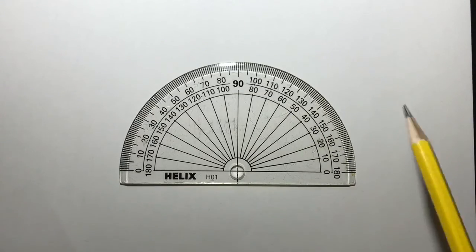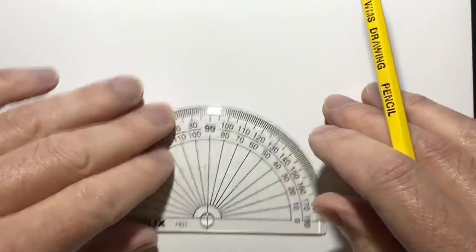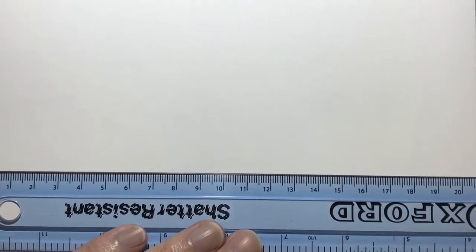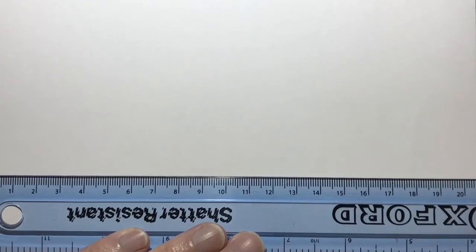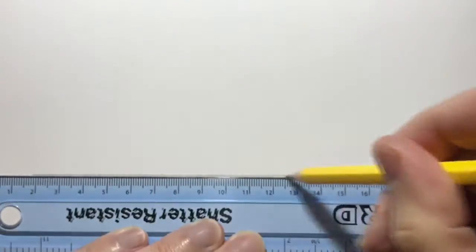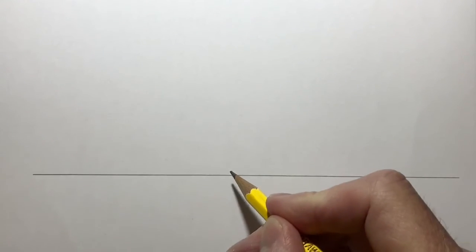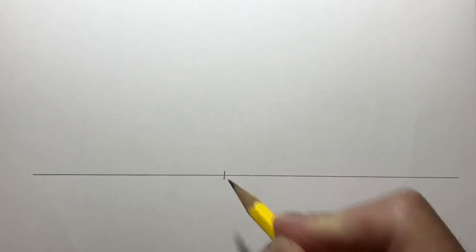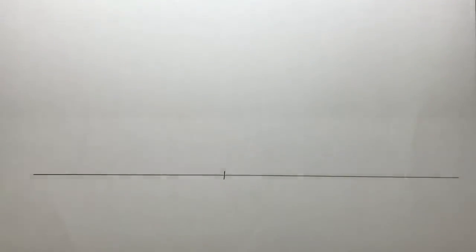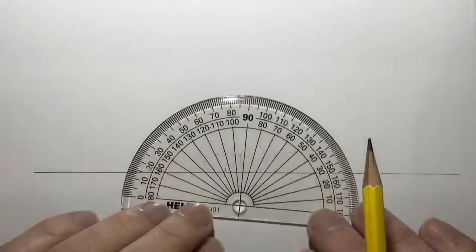To learn how to use it we need to first start with a line. So I'm going to draw a horizontal line to begin with. There we go. And in the middle of the line I'm going to put a mark. That's where we're going to draw our angle from.